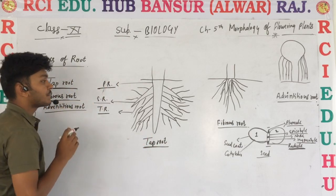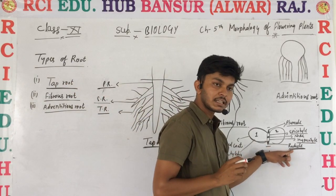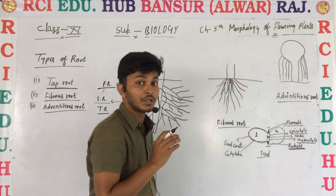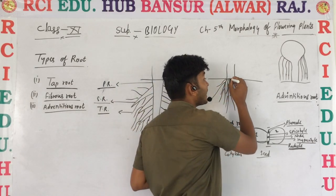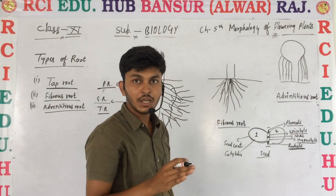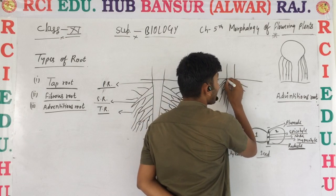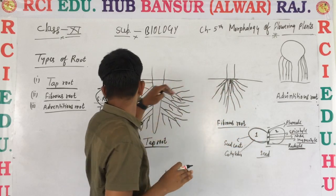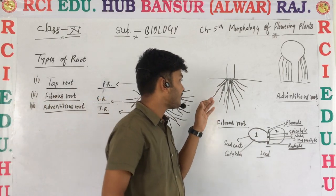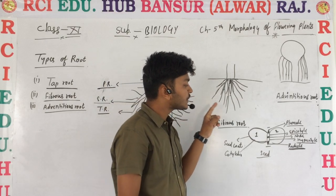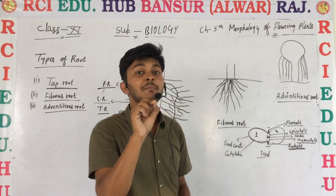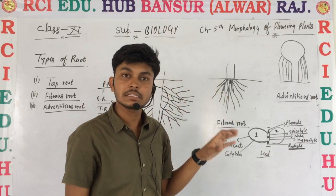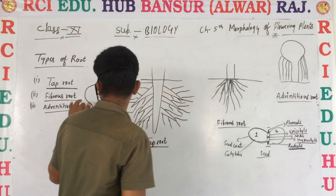Next we talk about fibrous root. In fibrous roots, initially the root emerges from the radical — that is called the primary root. But after some time, this primary root is destroyed. After its destruction, from the basal portion of the stem, many roots emerge. That type of root is known as fibrous root. When we pull out plants like bajra or wheat, we can see many fibrous-looking roots — those roots are fibrous roots.